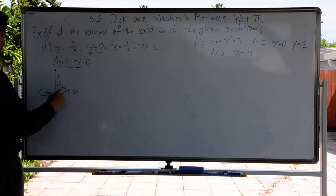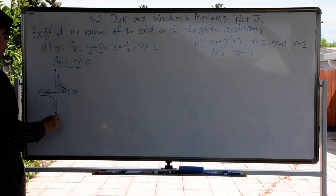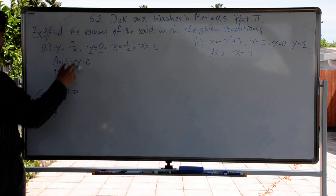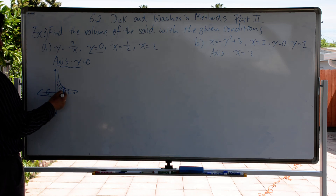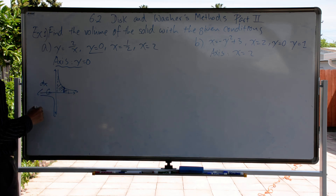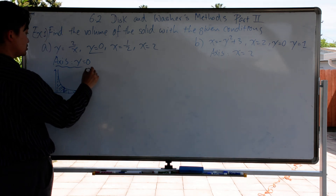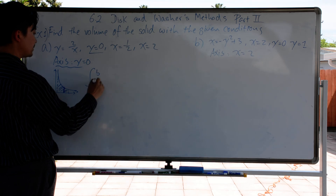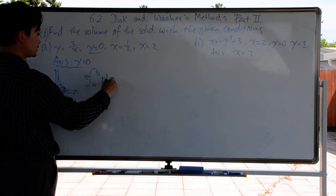One thing we notice: if the indicator is perpendicular to the revolution axis, that means we're using the Disk or Washer Method. If it's perpendicular, that means this one is vertical. If it's vertical, we're using dx. The general formula for the Disk Method is pi times the integral from A to B of r squared of x times dx.